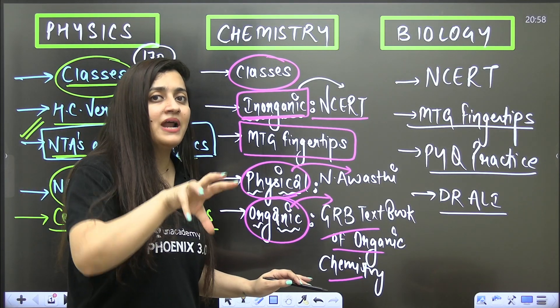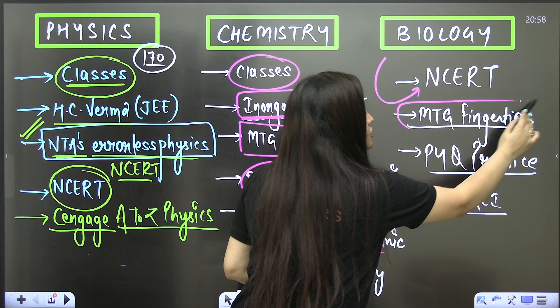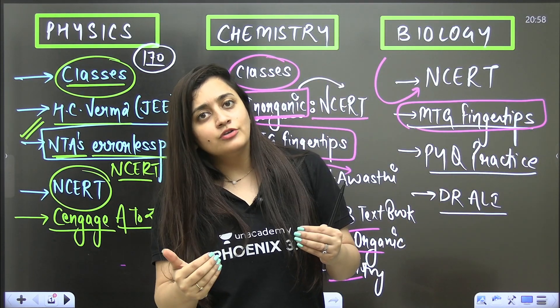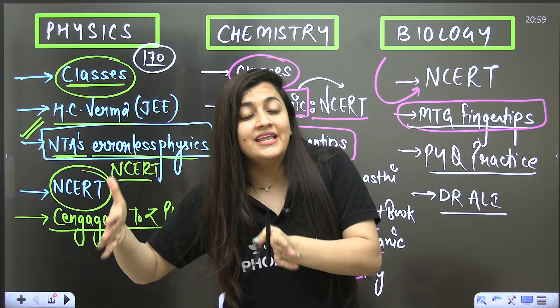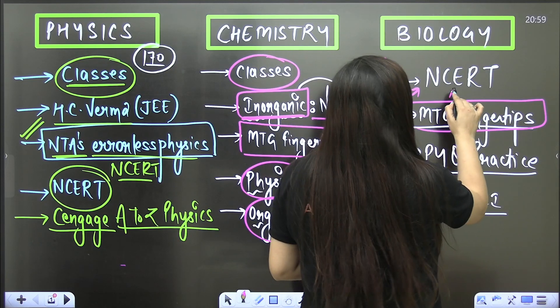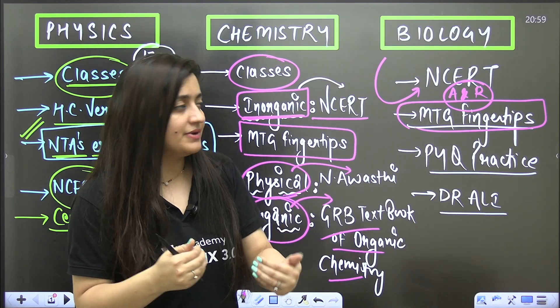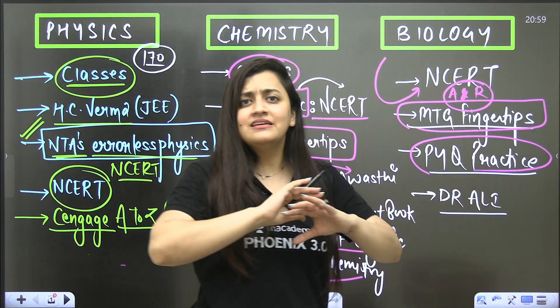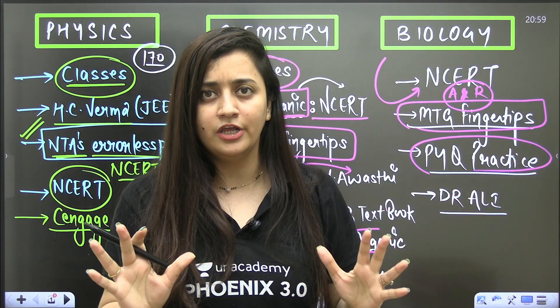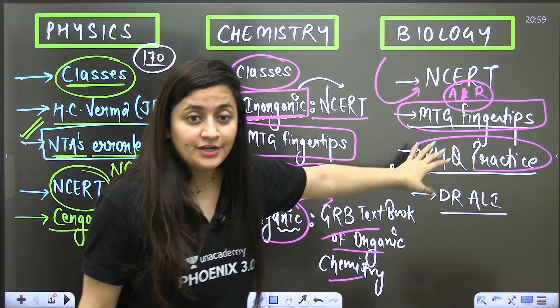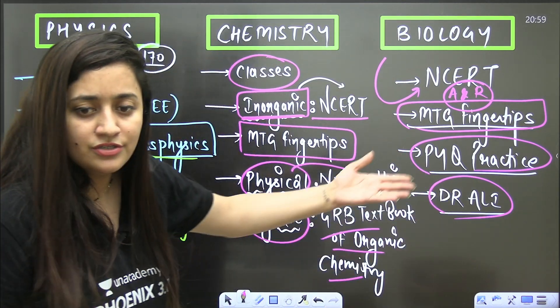Now when it comes to biology, you know it very well we have to decode the NCERT. MTG Fingertips, you can follow this particular book. You can solve the questions, they are NCERT-based. These days many questions are coming from assertion and reason, so from MTG publication you can buy a separate book for practicing the assertion and reason-based questions as well. For PYQ practice I'll recommend you can go for any book, there are so many books in the market. Bishop Publication is there, Arihant Publication is there, that is purely your choice. It is my recommendation that you can go for MTG Fingertips and there is one more book, Dr. Ali's Biology is also there in the market.